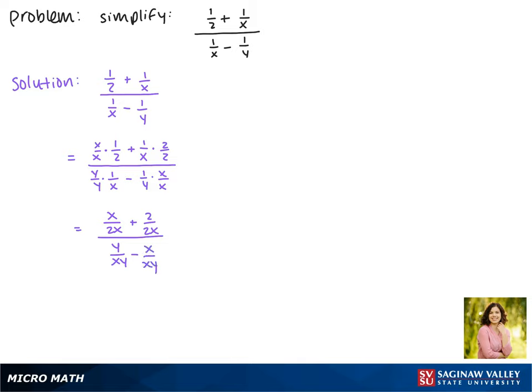Now that we have common denominators we can combine the numerators. So we get x plus 2 over 2x over y minus x over xy.